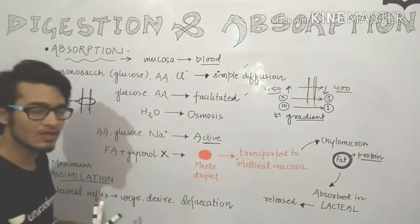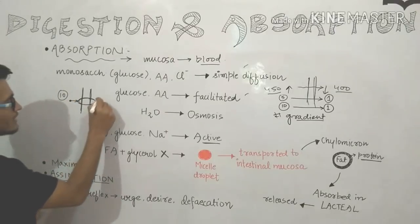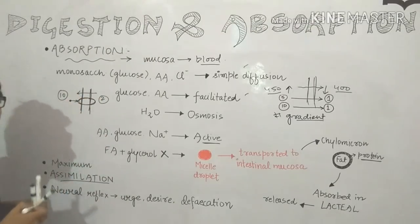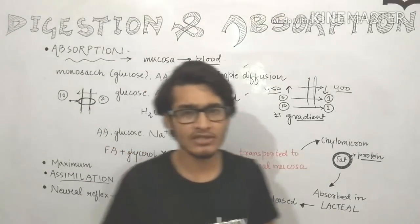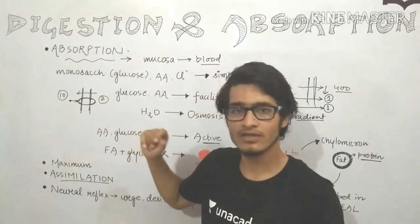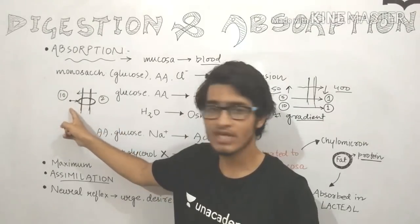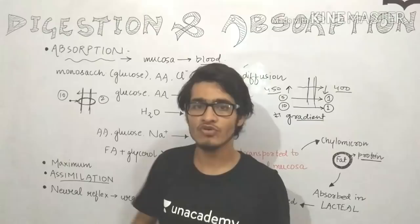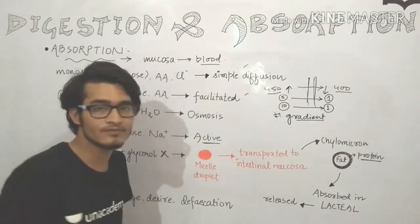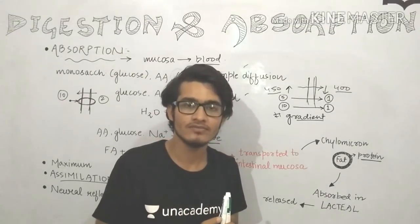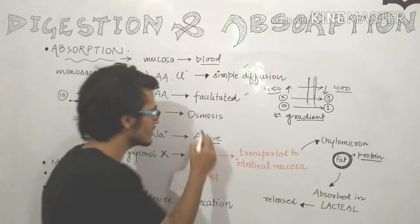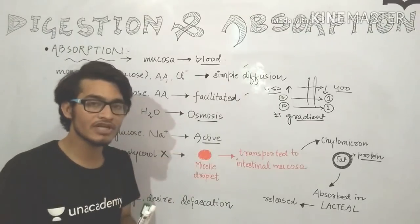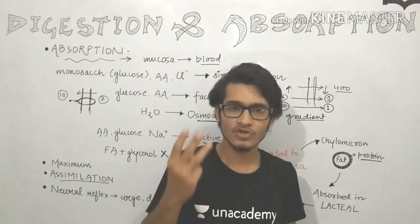In active transport, particles are moved against the concentration gradient — from low to high concentration — so energy (ATP) is required. Osmosis is specifically the passive transport of water and also requires no energy. So to summarize: there is simple diffusion, facilitated diffusion, osmosis, and active transport.